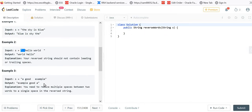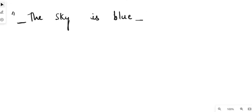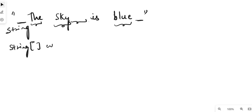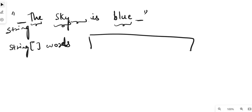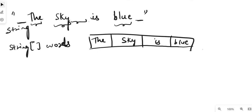So let's understand the approach. Let's take the example 'the sky is blue'. Before 'the' we have some spaces, after 'blue' we have some spaces, and between 'the sky' and 'is' we have multiple spaces. First, we need to separate all the words — we can take one array called 'words' and store all the words in it by splitting the string using spaces.